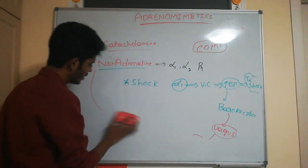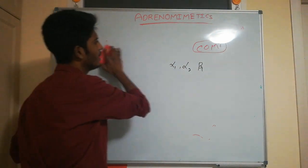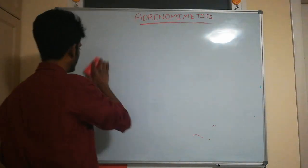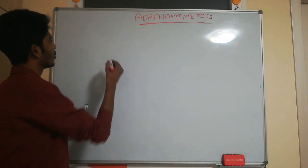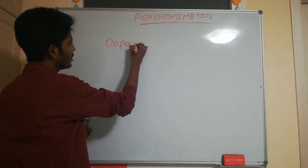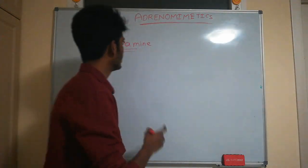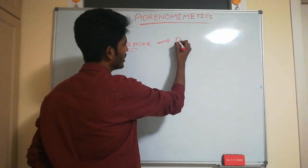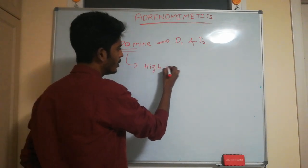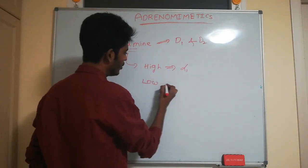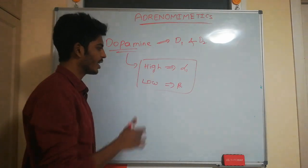There are groups of drugs that stimulate only alpha receptors or only beta receptors. Before discussing alpha adrenomimetics, let's talk about dopamine, an intermediate metabolite produced during adrenaline and noradrenaline formation. Dopamine stimulates dopamine receptors D1 and D2. At high concentration dopamine stimulates alpha 1; at low concentration it stimulates beta 1 receptors — somewhat similar to adrenaline.